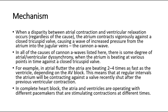In all of the causes of Canon A waves listed here, there is some degree of atrial or ventricular dyssynchrony, when the atrium is beating at various points in time against a closed tricuspid valve. For example, in atrial flutter the atria are beating two to four times as fast as the ventricle, depending on the AV block. This means that at regular intervals, the atrium will be contracting against a valve recently shut after the previous ventricular contraction.